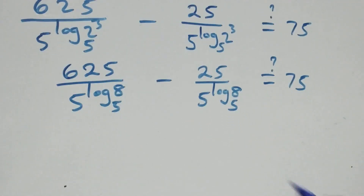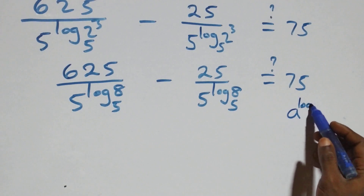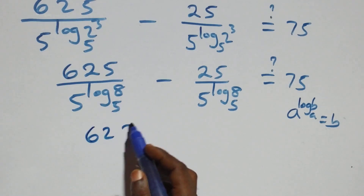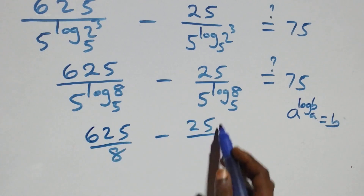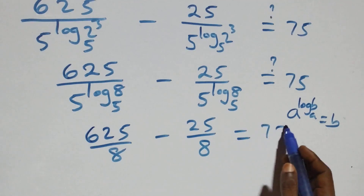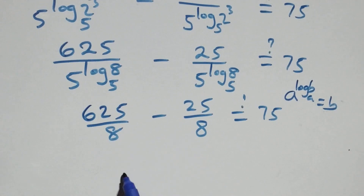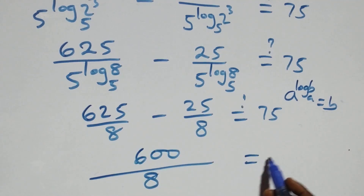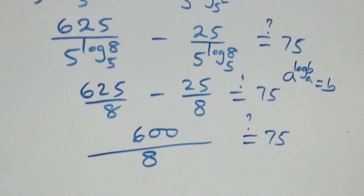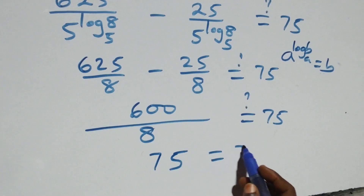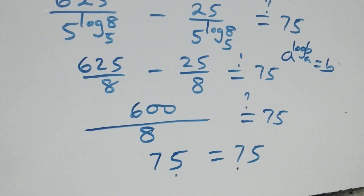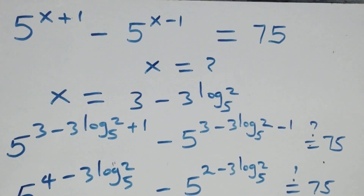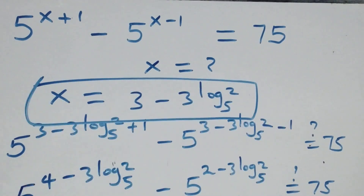Using the identity a raised to the power log base a of b equals b, the denominator simplifies to 8. So we have 625 over 8 minus 25 over 8. Combining over the same denominator: 625 minus 25 equals 600, giving 600 over 8, which equals 75. The left-hand side equals the right-hand side, confirming that x equals 3 minus 3 log base 5 of 2 satisfies the given equation.